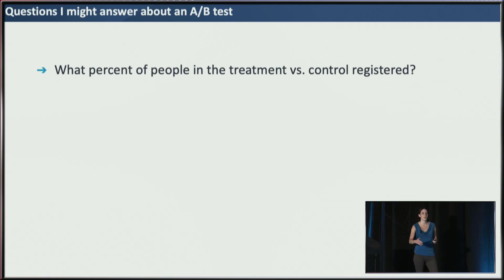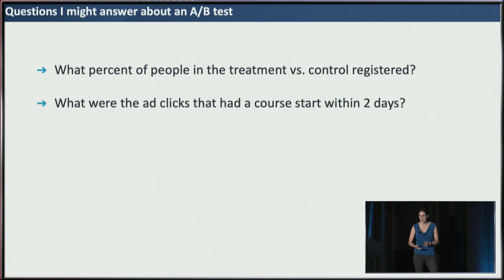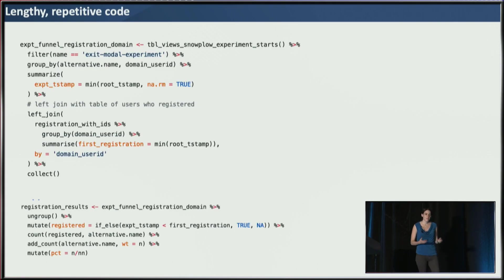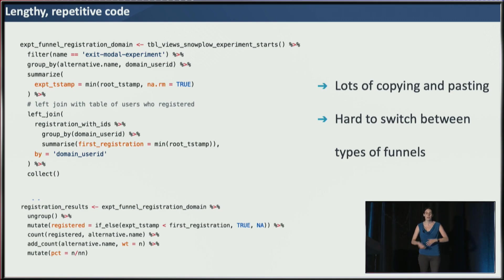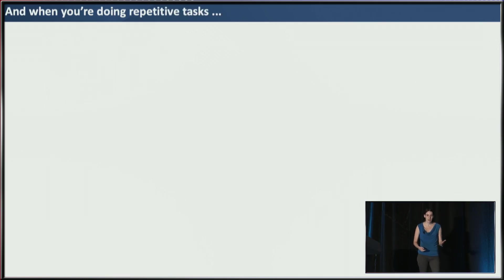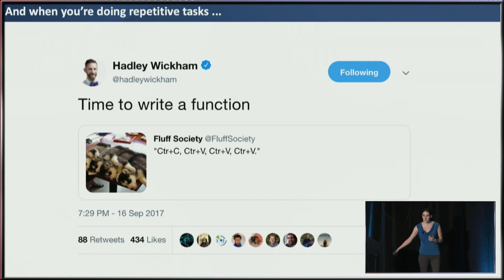What were the ad clicks that had a course start within two days? My first attempt at doing this involved a lot of lengthy, repetitive code. There was a ton of copying and pasting, and it was very hard to switch between different types of funnels — switching between, say, the first time they did this and then the first time they did that, versus the first time they did this and everything they did after. When you're doing repetitive tasks, it's time to write a function, and in my case, a package.